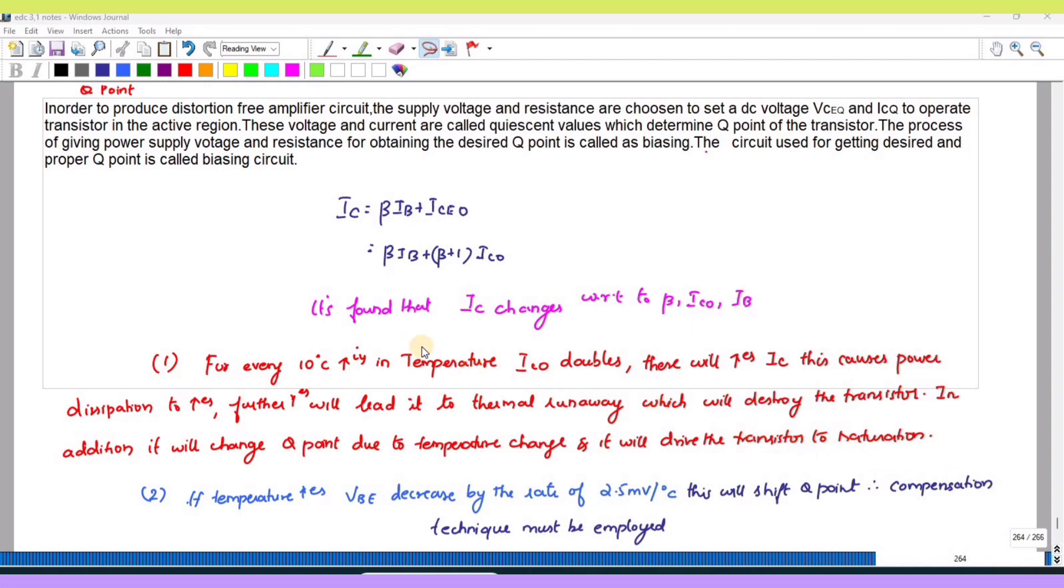So this is about IC naught. Next, VBE - VBE is the voltage across the base and emitter. The current flowing through this is IB. If the temperature increases, VBE gets decreased by the rate of 2.5 millivolts per degree C. We know that for silicon it is 0.6 to 0.7, and for germanium it is 0.3. If the temperature increases it will reduce by this factor.